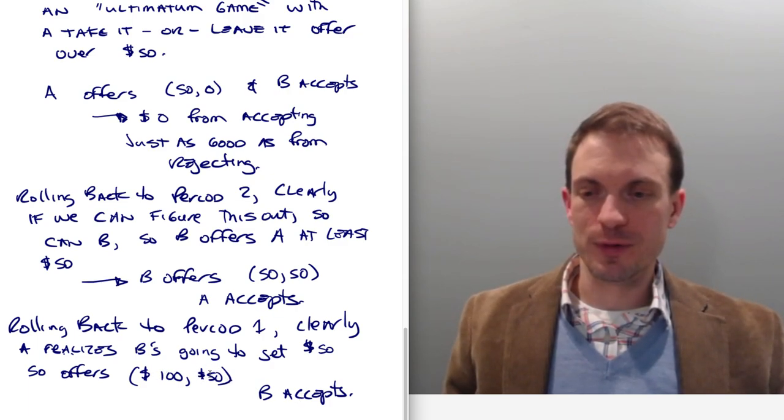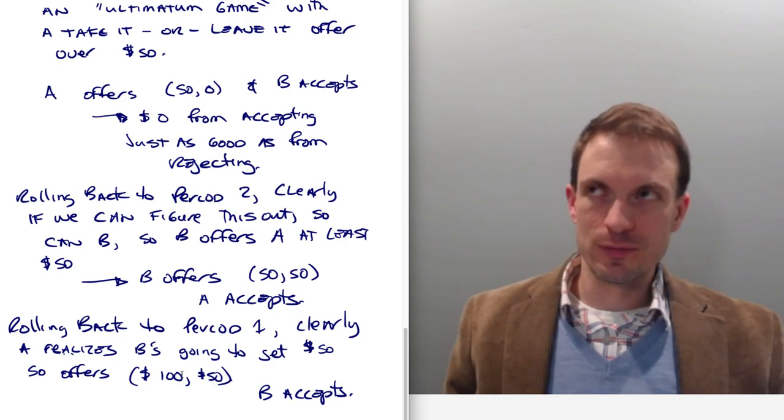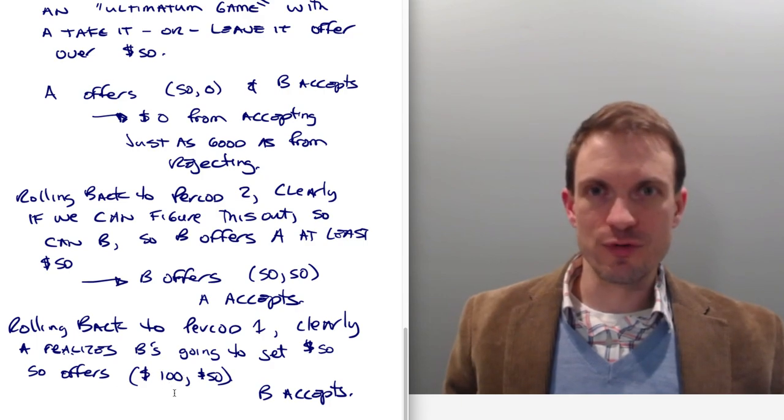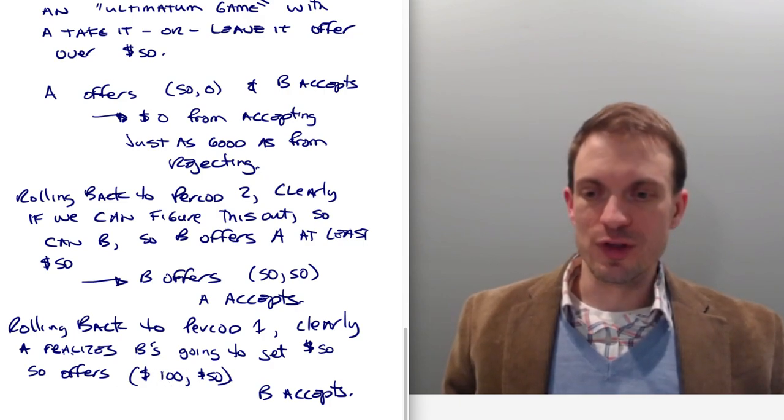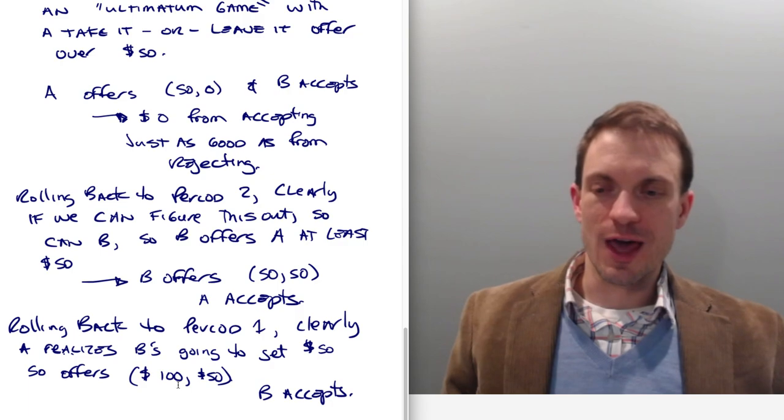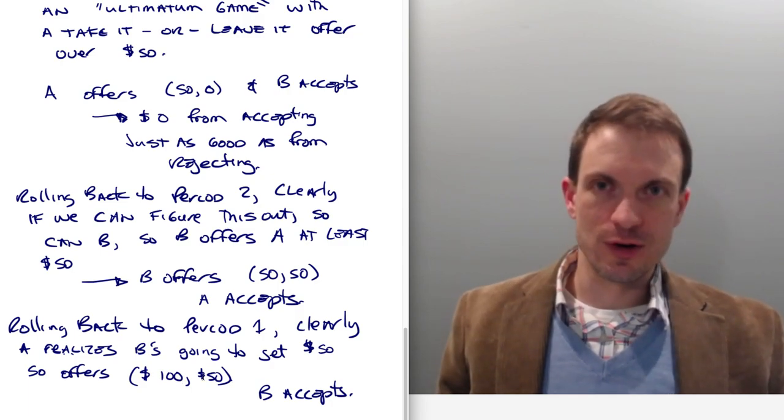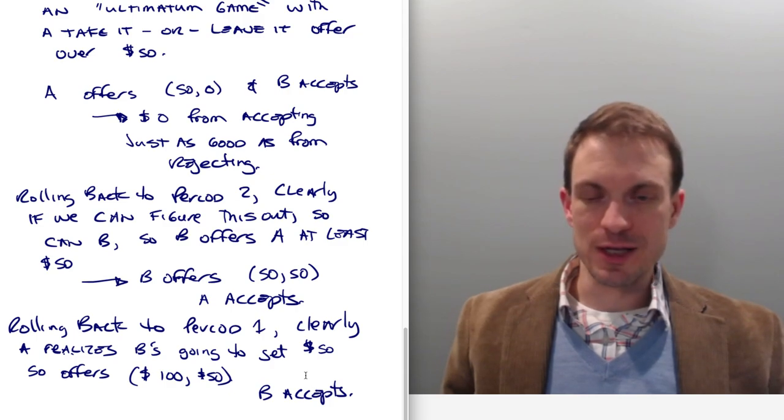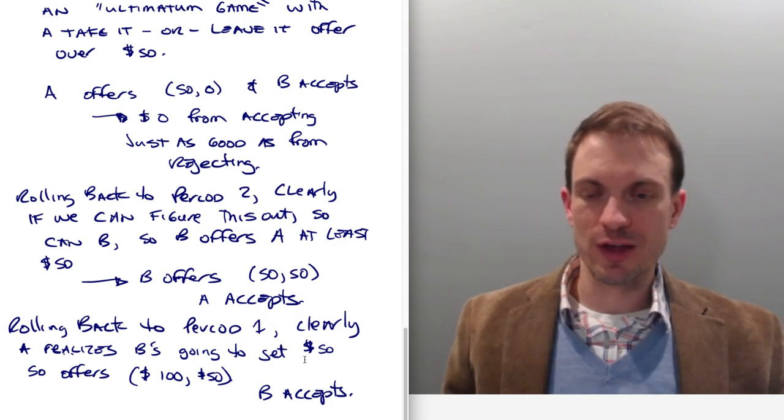Matter of fact, the player should realize they should be able to kind of look forward and then look backwards in the game and realize that they can't improve upon this offer. And so this is an equilibrium. Person A is going to offer $100. Person B is going to get 50 and accept. And the game is going to end immediately. So, all right, that's a theoretical prediction. And I think that gives us some really good logic in a large number of cases.